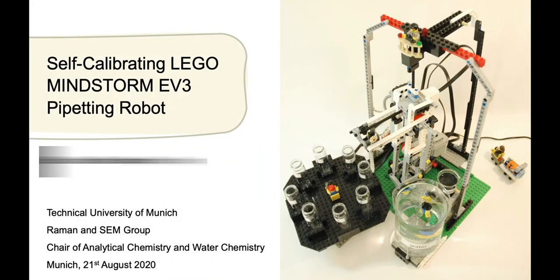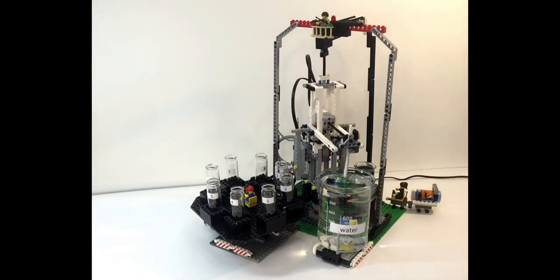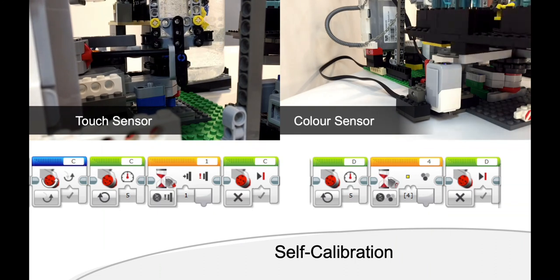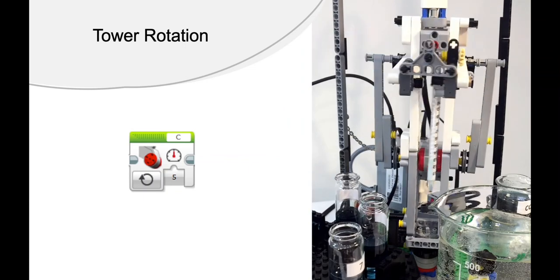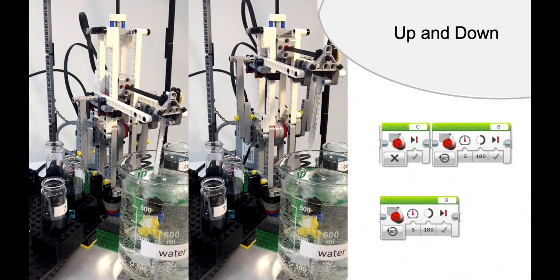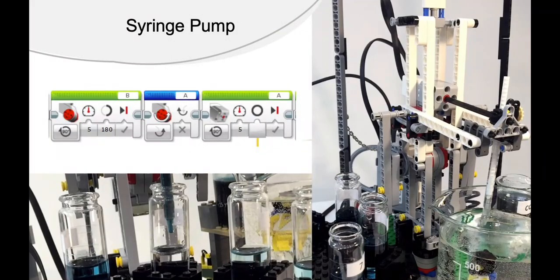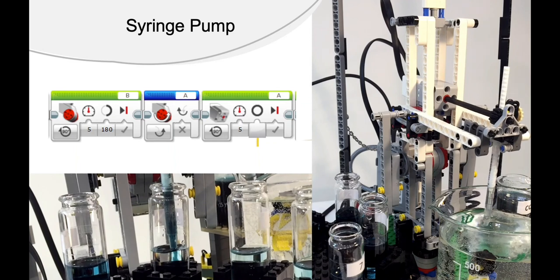Lastly we have another pipetting robot and here the goal was to do a dilution series and this group took special care to really film every single angle that they could find and to explain the code for each sensor that was used. They're using a touch sensor, a color sensor, they are doing tower rotations and they are doing an up-down movement of the syringe as well as the insertion of the color into the collection vessels.